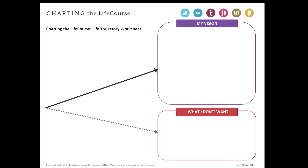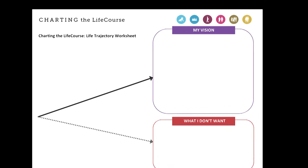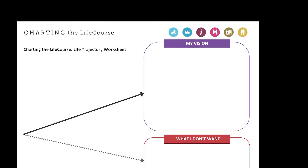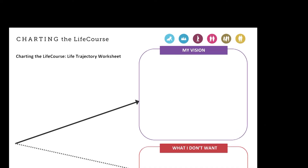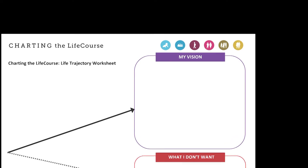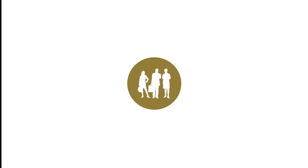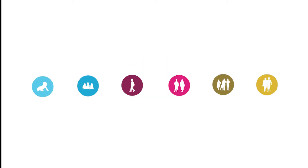There are life stage icons located at the top right-hand side of the worksheet. These life stages include prenatal and infancy, early childhood, school age, transition, adulthood, and aging. You can choose to use the life stages as a starting point for creating goals.